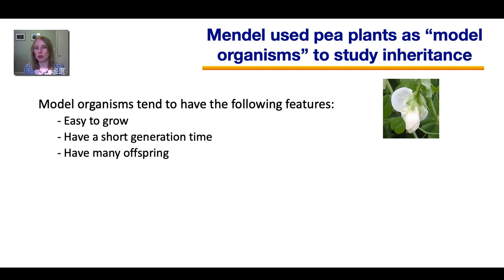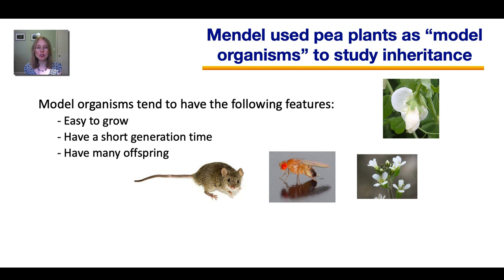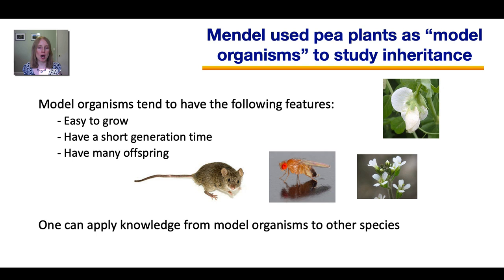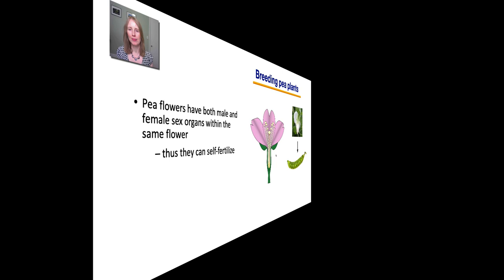Model organisms have a short generation time, so you can quickly go from parents to children to grandchildren. And they have a lot of offspring, which is important for generating a lot of data — important in science. These are some commonly used model organisms today: mice, fruit flies, and a little plant called Arabidopsis. But Mendel used pea plants, which are also good models. So what we can learn from these model organisms can then be applied to other species, including animals.